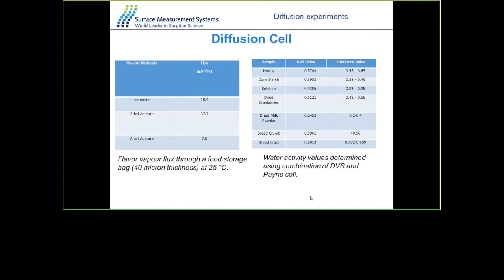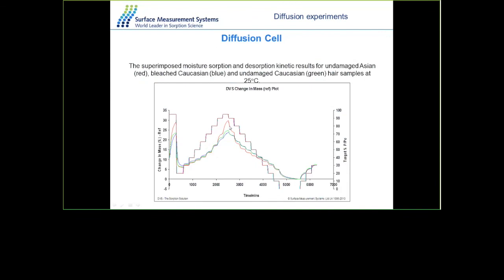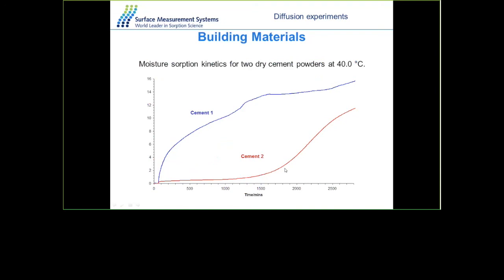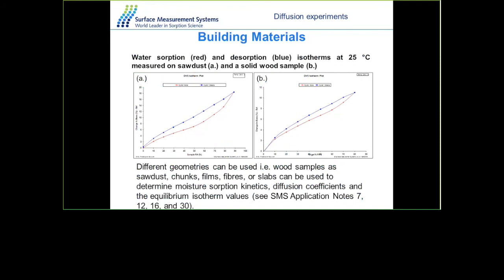A typical example is limonene, ethyl acetate, or amyl acetate — flavoring materials that can pass through food packaging — and the same technique can be used to measure water activity for food materials. We have tested a series of food materials including honey, cornstarch, and ketchup, with values in very good agreement with literature. For hair, damaged, bleached, or heat-treated hair can all be distinguished by differences in mass uptake. For building materials, one type of cement picks up moisture very late while another does so very quickly, revealing shelf life and stability differences.